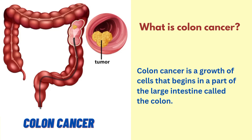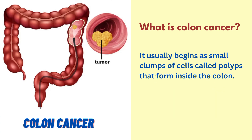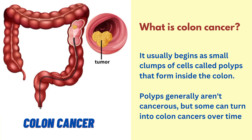What is colon cancer? Colon cancer is a growth of cells that begins in a part of the large intestine called the colon. It usually begins as small clumps of cells called polyps that form inside the colon. Polyps generally aren't cancerous, but some can turn into colon cancers over time.